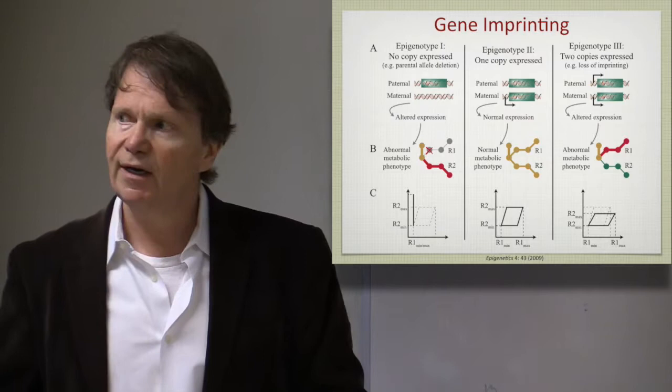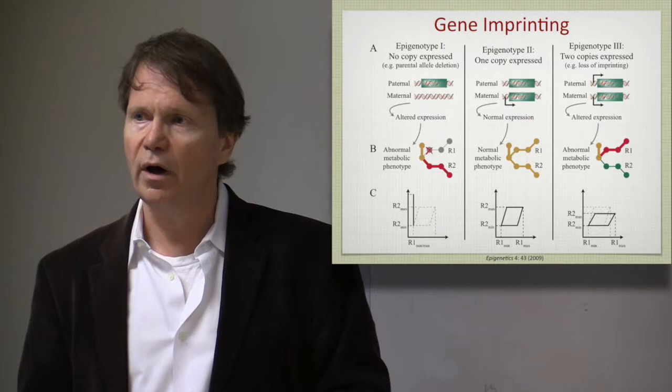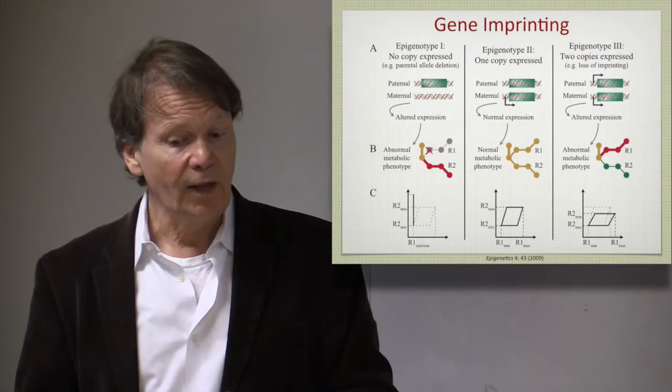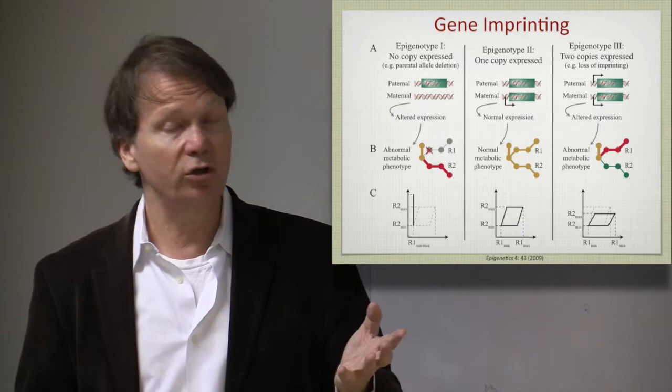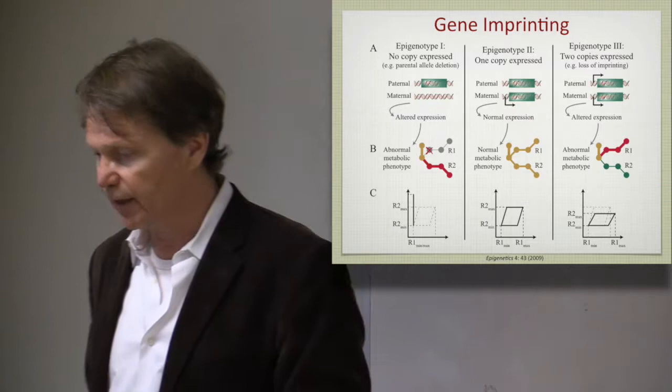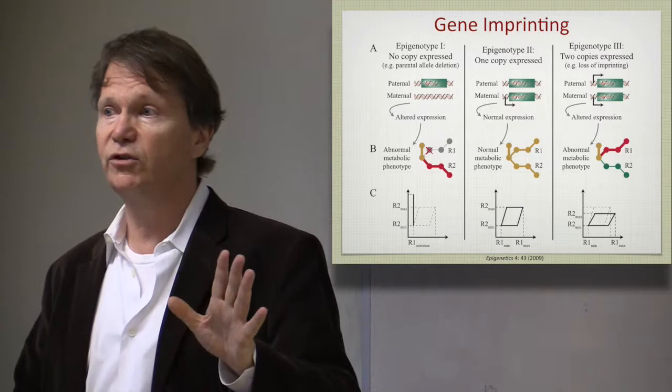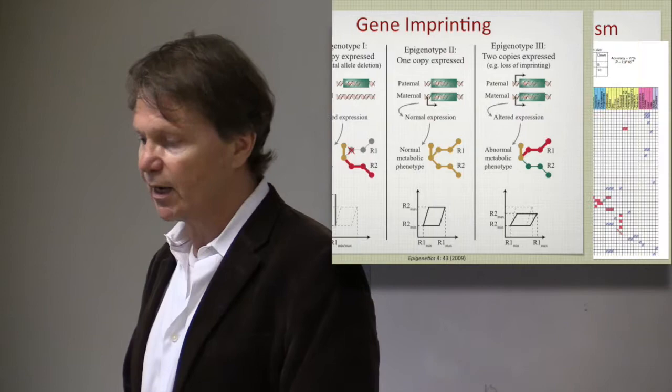There are something like nine known imprinted genes in RECON1. And in this little paper that is looked at here at the bottom, RECON1 is used to calculate the likely metabolic disturbance, or how the metabolic state wobbles as a result of loss of imprinting. And it's very consistent with the characteristics of people that have that loss of imprinting. So here's a completely different genetic parameter that one can look at.